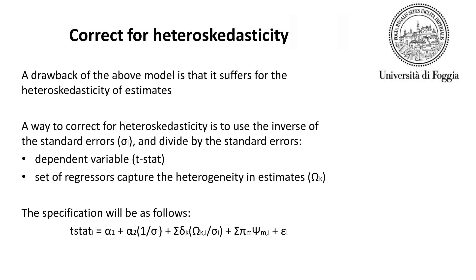In order to correct for the heteroscedasticity of estimates, it is useful to use the inverse of the factors of the standard errors as an explanatory variable, and to divide the dependent variable by the standard errors to obtain t-statistics.